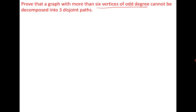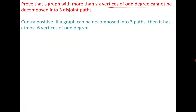The problem is more easy to understand if we write down its contrapositive. The contrapositive says: if a graph is decomposed into 3 paths, then it has at most 6 vertices of degree 4. The proof is quite trivial — these 3 paths have 6 endpoints, and these endpoints could have odd degree. When decomposed into 3 paths, at most 6 endpoints are there which could have odd degree, and this proves the required result.